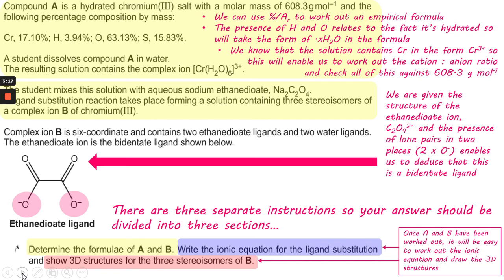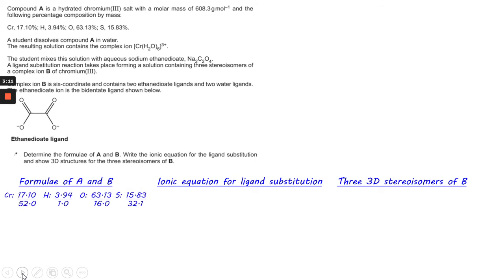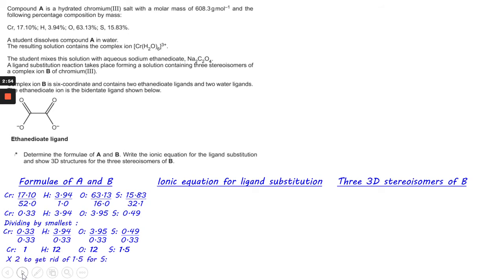Let's have a quick look at where to start. As we said, we'll work in three sections. We start with the empirical formula, dividing the percentage by the relative atomic mass, which gives you this ratio. Divide through by the smallest to get this. The problem is we've got sulfur still as 1.5, but it's easy to deal with—multiply by 2 to get rid of that, giving you Cr₂H₂₄O₂₄S₃.